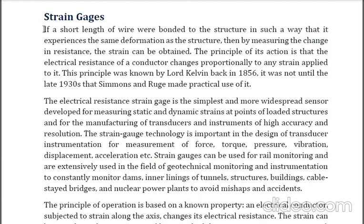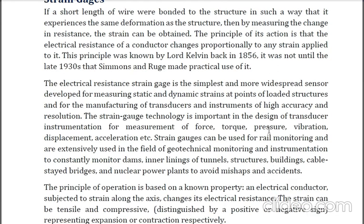This principle that resistance is proportional to strain was first proposed by Lord Kelvin in 1856, but it was not made into practice until the late 1930s by Siemens and Rugg. Applications of strain gauges include sensing elements in transducers for measurement of force, torque, pressure, vibration, displacement, and acceleration. It is also used in rail monitoring and extensively used in the field of geotechnical monitoring and instrumentation to constantly monitor dams, inner linings of tunnels, structures, buildings, and nuclear power plants.